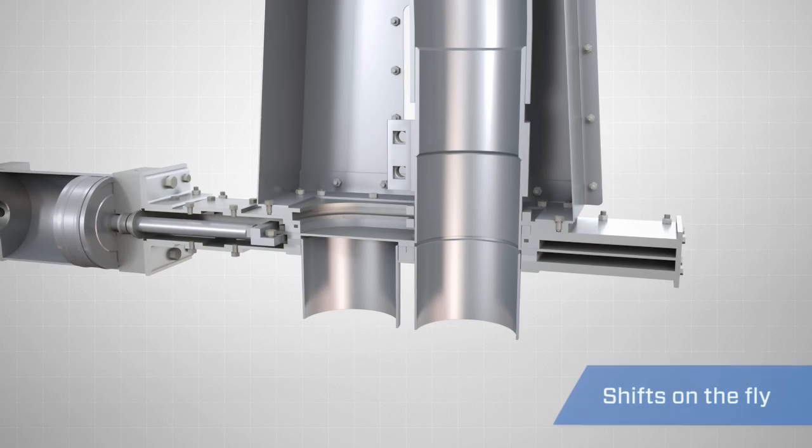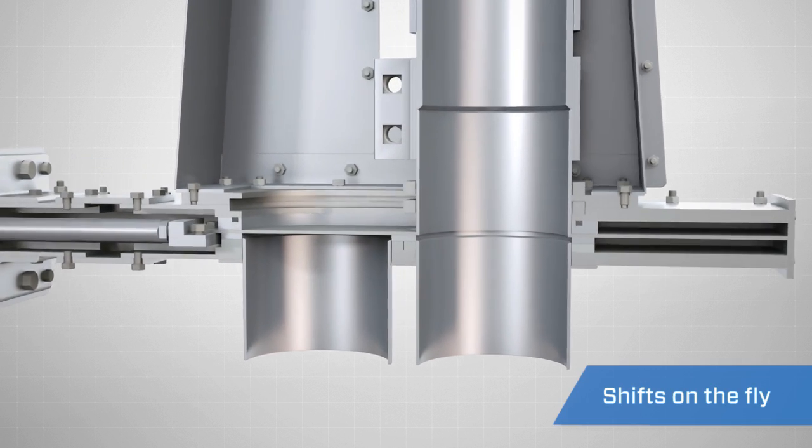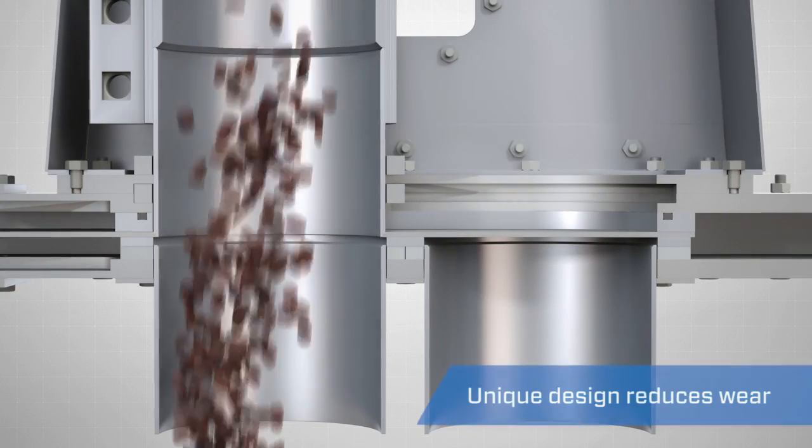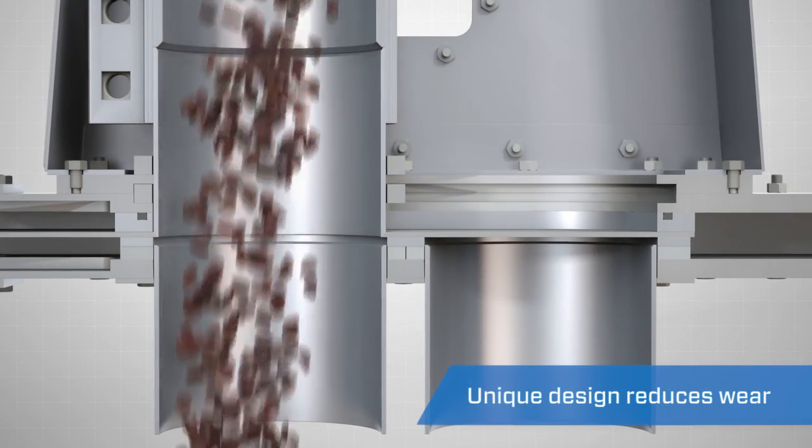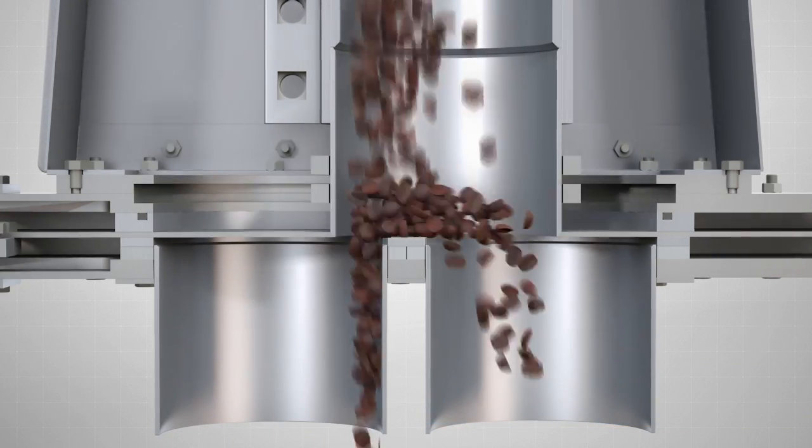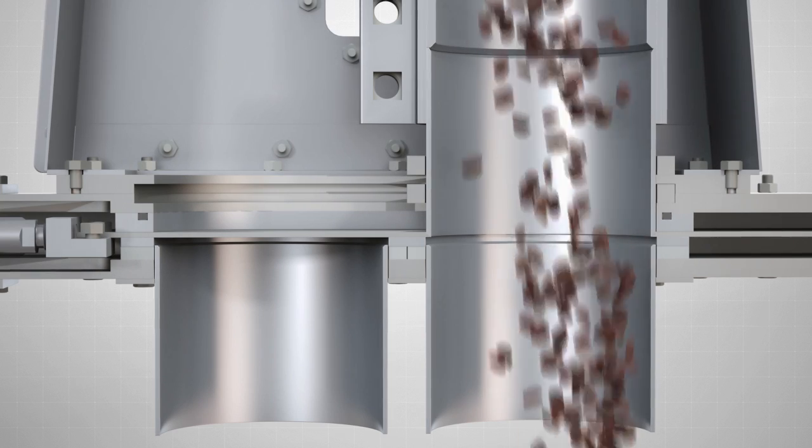The unique design allows the diverter to shift on the fly without shutting down the convey system's blower. This feature makes the system more efficient and reduces wear on the blower. In certain applications, the diverter can shift on the fly while material is being conveyed through the system.